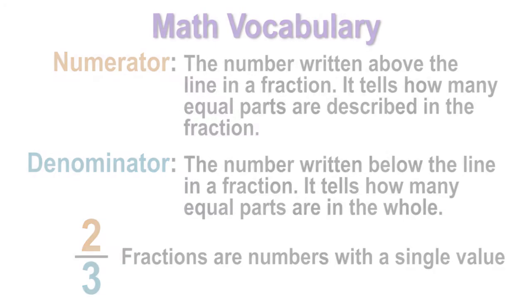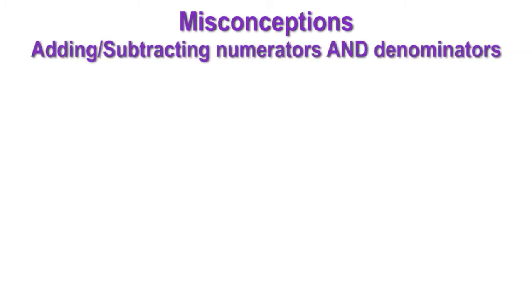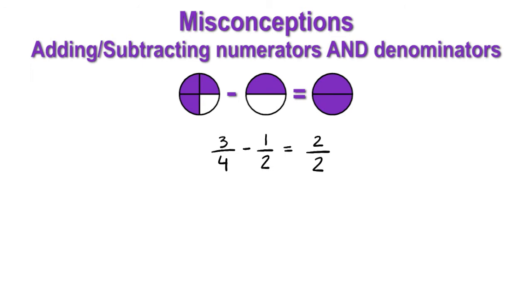Let's begin with some common misconceptions that occur when working with fractions. One misconception that can occur is that the numerators are added or subtracted and the denominators are added or subtracted. For example, three fourths minus one half is solved by taking three minus one for a difference of two, and four minus two for a difference of two, for a final answer of two halves. This is incorrect.